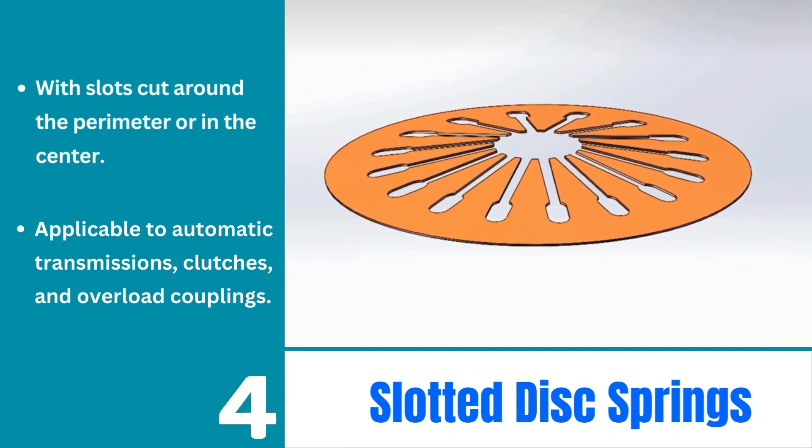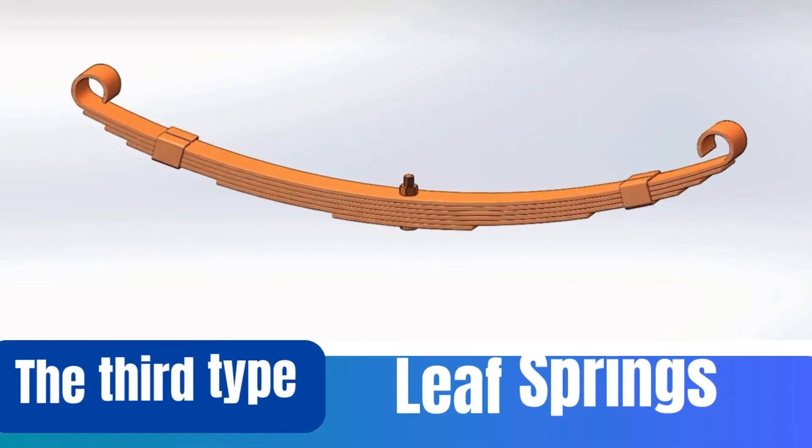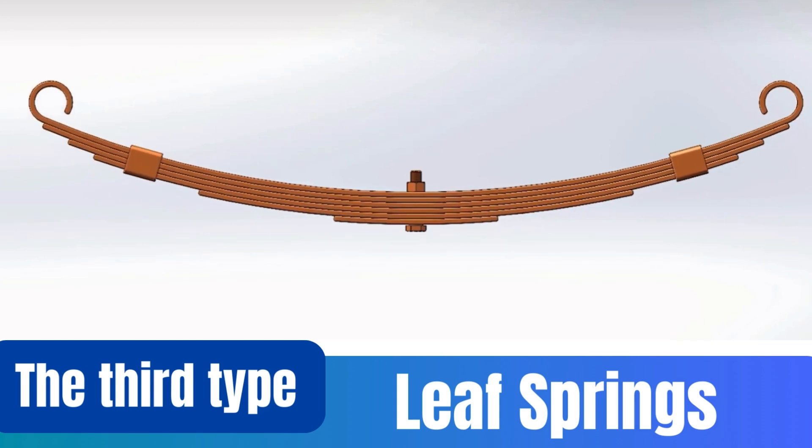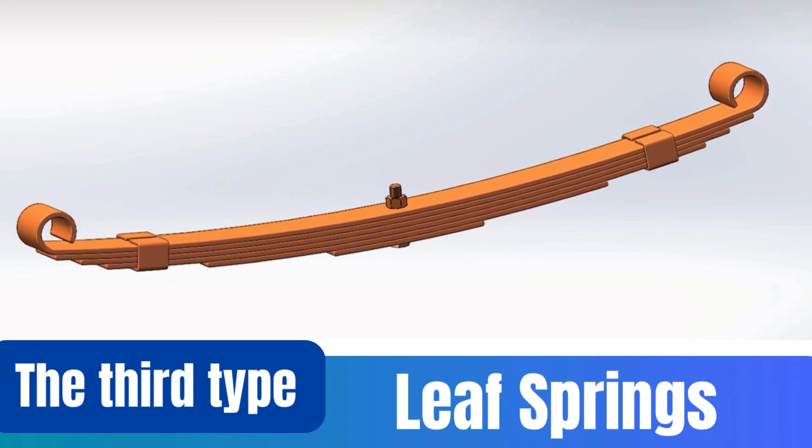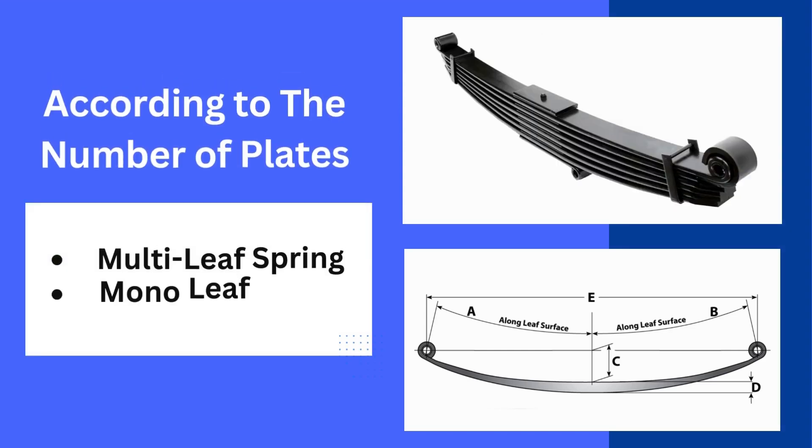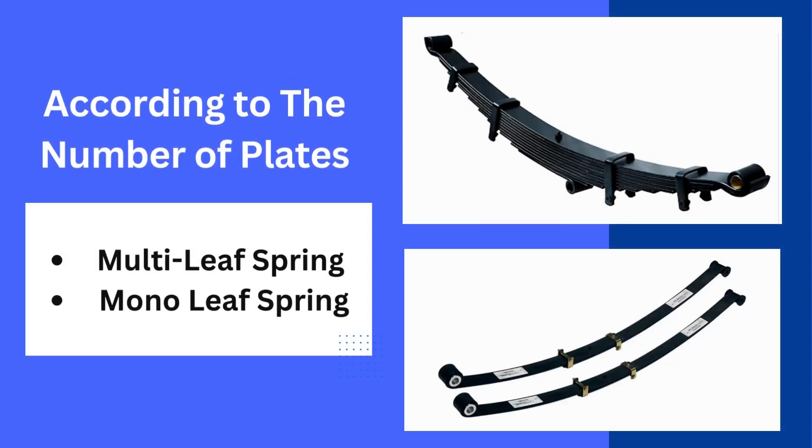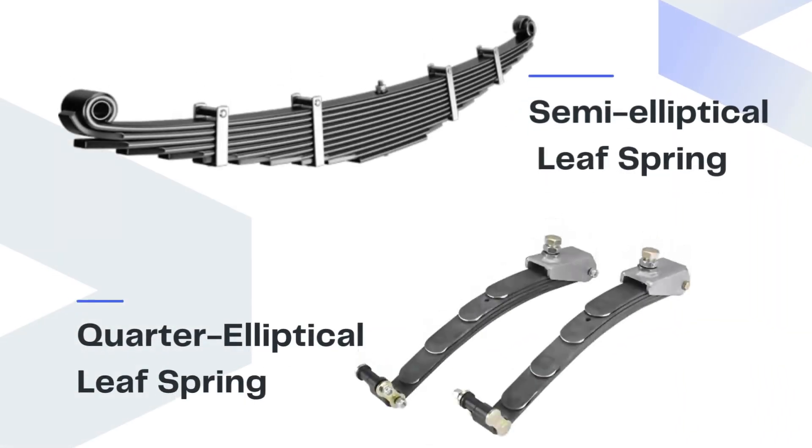Feel the bumps on the road? Leaf springs in cars help absorb those impacts. They're made of layers of steel in different sizes stacked on top of each other, appearing like a bow capable of withstanding large forces in small areas. According to the number of plates, it can be divided into multi-leaf spring and mono-leaf spring. According to the shape of the leaf spring, there's the semi-elliptical leaf spring, the most common type of this suspension component.